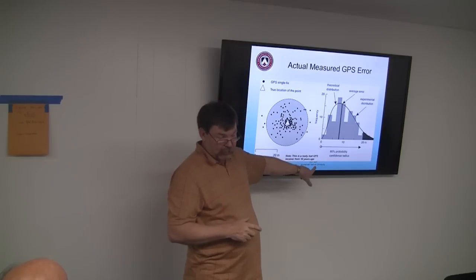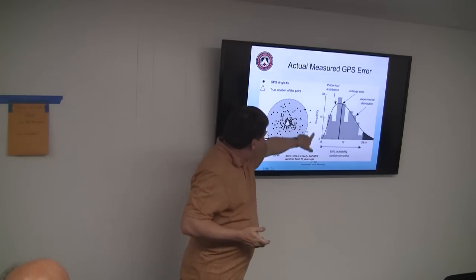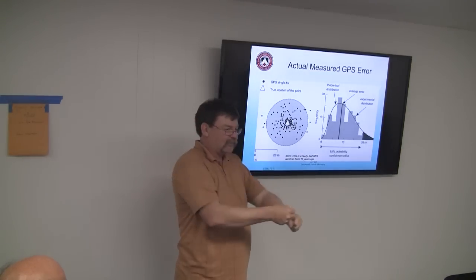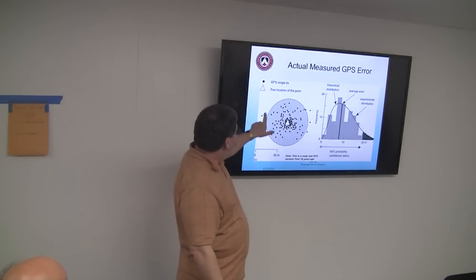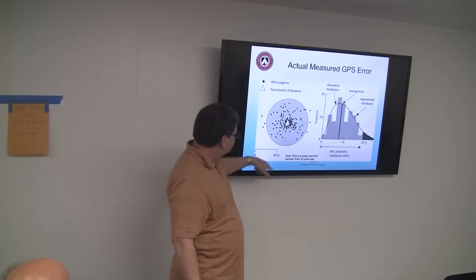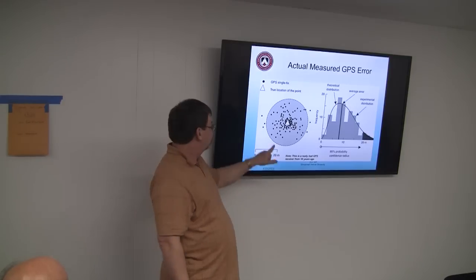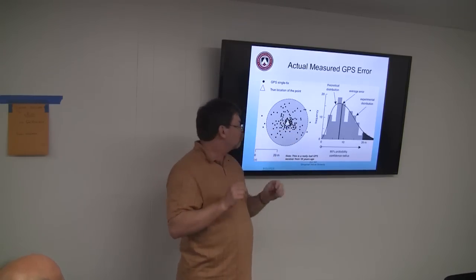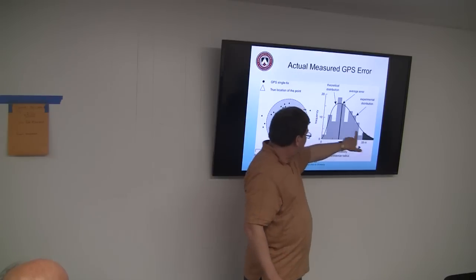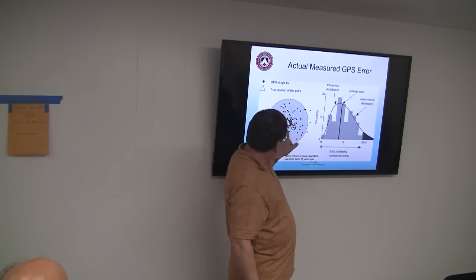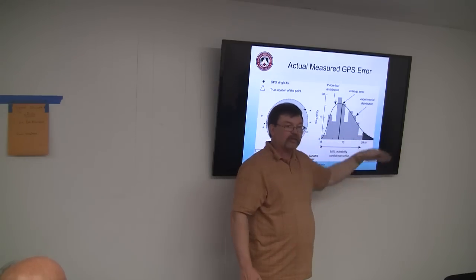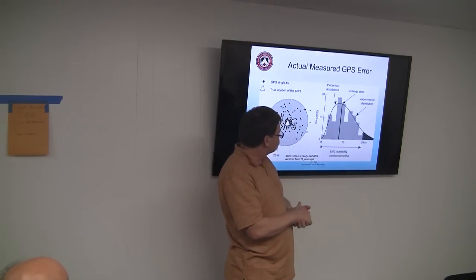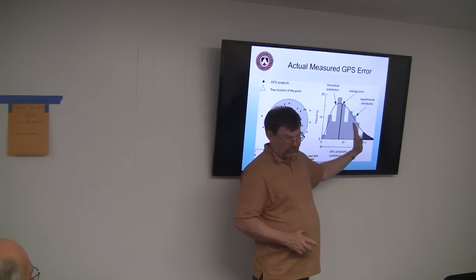Here's actual data from a real GPS — a really bad one from about ten years ago. The test is simple: stick your GPS in one spot and let it run for 24 hours. You'll get a plot like this, showing the circular error probability — the distribution of error around where the GPS says you are. The triangle is where you really are.